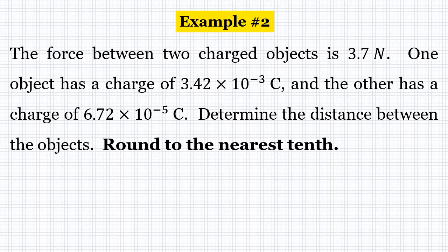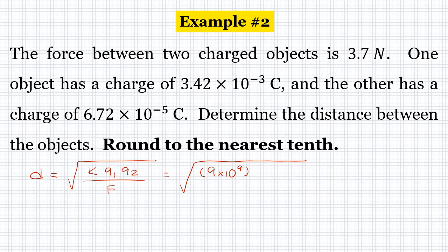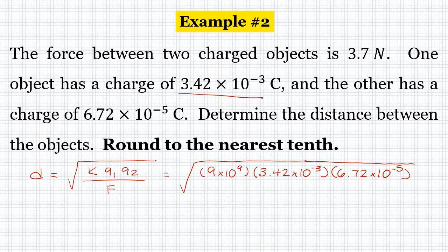Let's look at one last example. The force between two charged objects is 3.7 newtons. One object has a charge of 3.42 times 10 to the negative 3rd Coulombs, and the other has a charge of 6.72 times 10 to the negative 5th Coulombs. Determine the distance between the objects — round to the nearest tenth. Our equation is distance equals the square root of K times Q1 times Q2 over the force. K is 9 times 10 to the 9th, Q1 is 3.42 times 10 to the negative 3rd, Q2 is 6.72 times 10 to the negative 5th, and the force is 3.7 newtons.